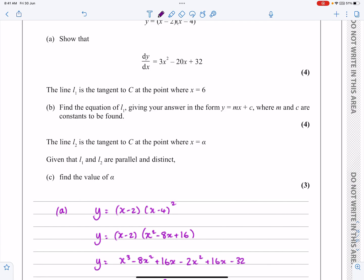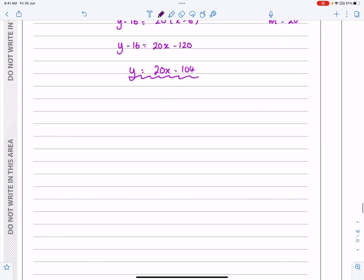So part C now says the line L2 is a tangent at the point where x equals alpha. Given that L1 and L2 are parallel and distinct, can we find the value of alpha? Well, I've explained it on the diagram. Let's explain what we're going to do here.